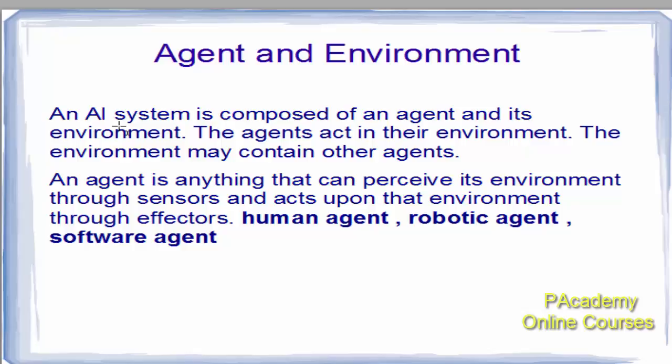The different kinds of agents are human agents, which use sensory perceptions like eyes, ears, nose, and mouth. Actions in humans are performed by effectors like hands and legs. Robotic agents and software agents are the other kinds of examples of agents.